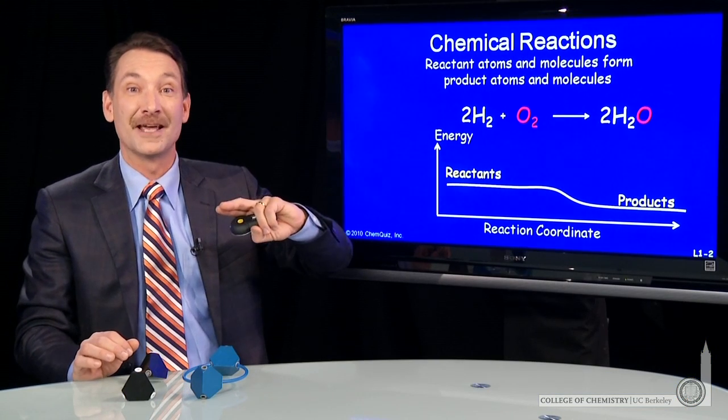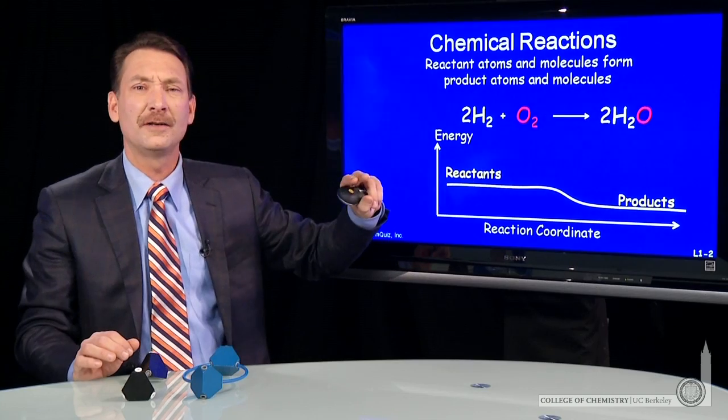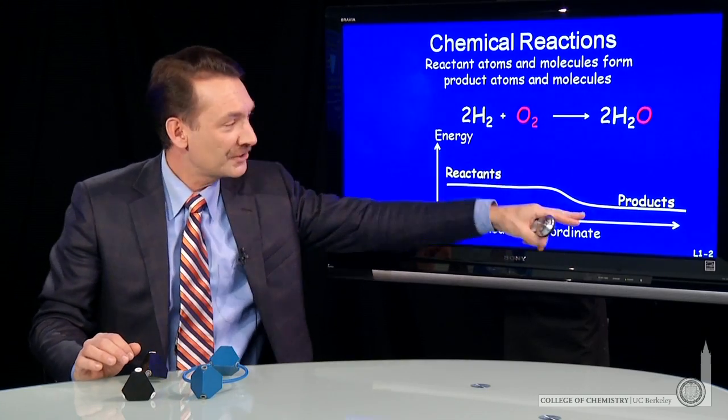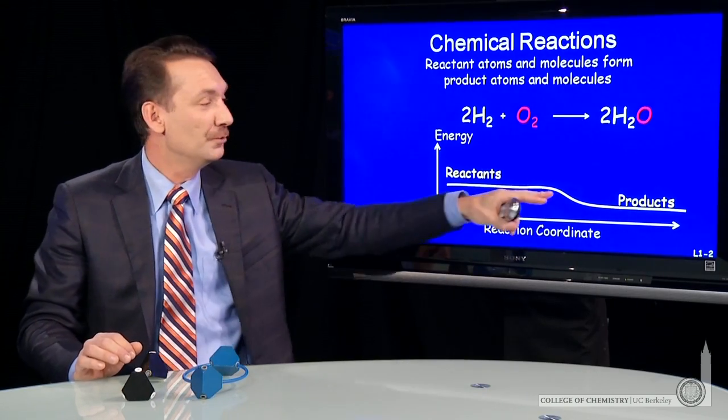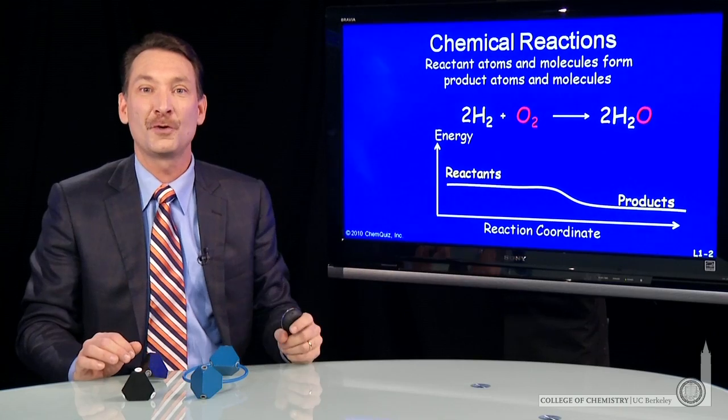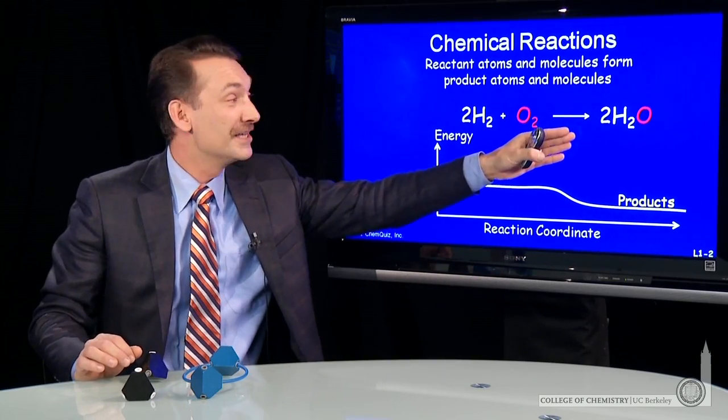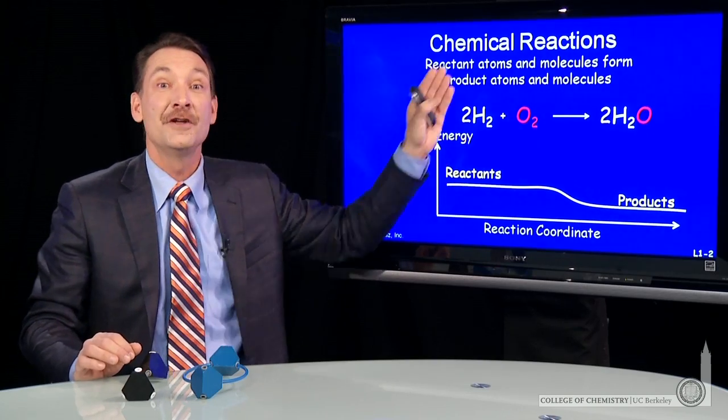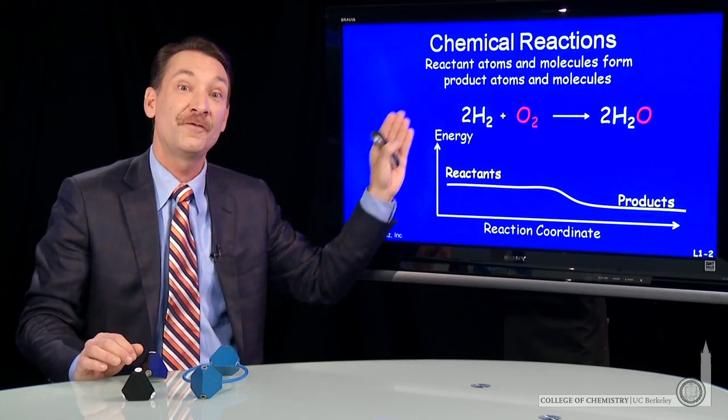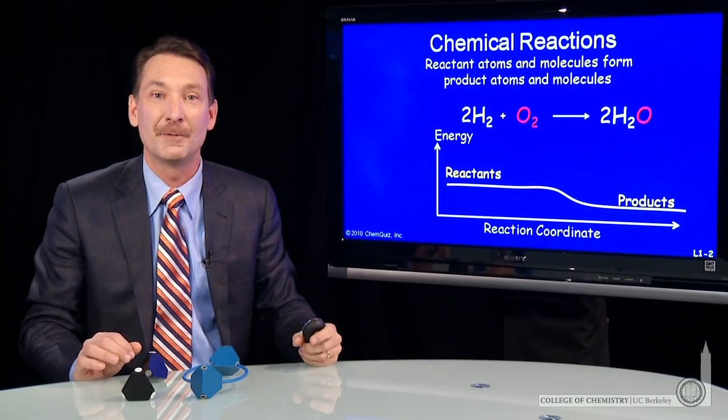Now, in a mechanical example, you'd say, well, if there were a ball on the top of this hill, it would naturally roll down to the bottom of the hill. That's the natural way of things. And it's the same for this chemical reaction. The natural way is for hydrogen and oxygen to form water. There's a natural favorable direction of this chemical reaction.